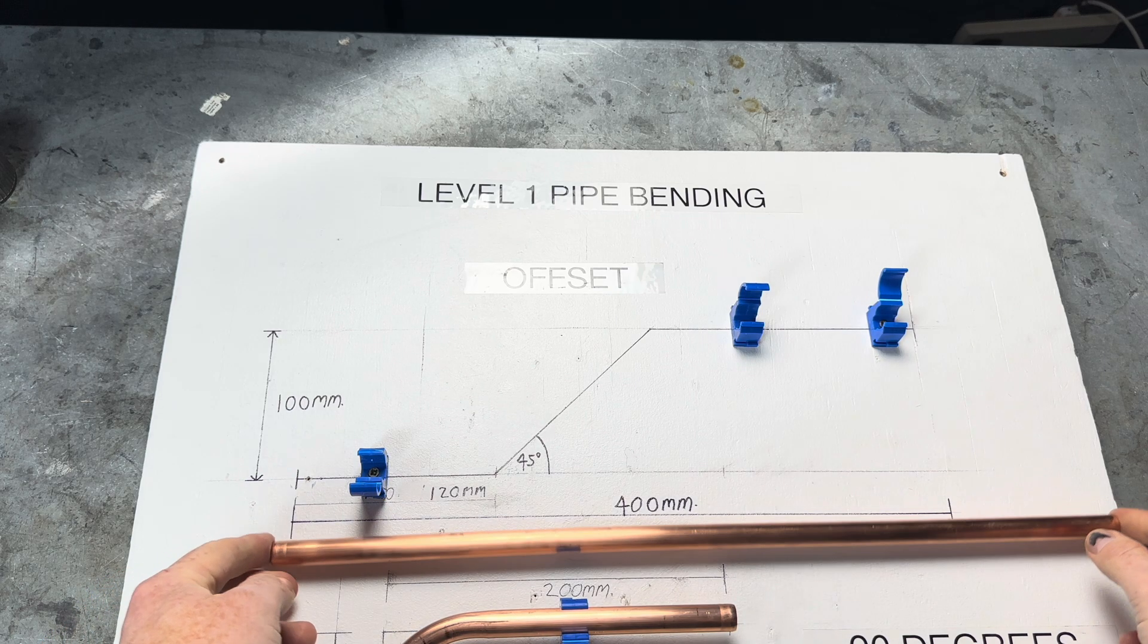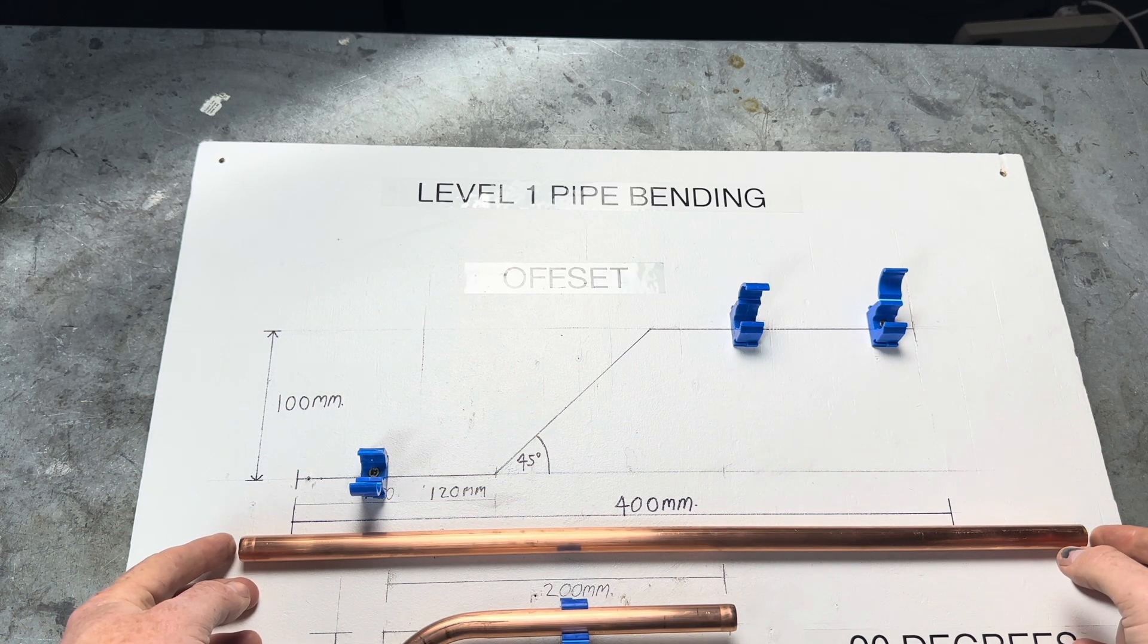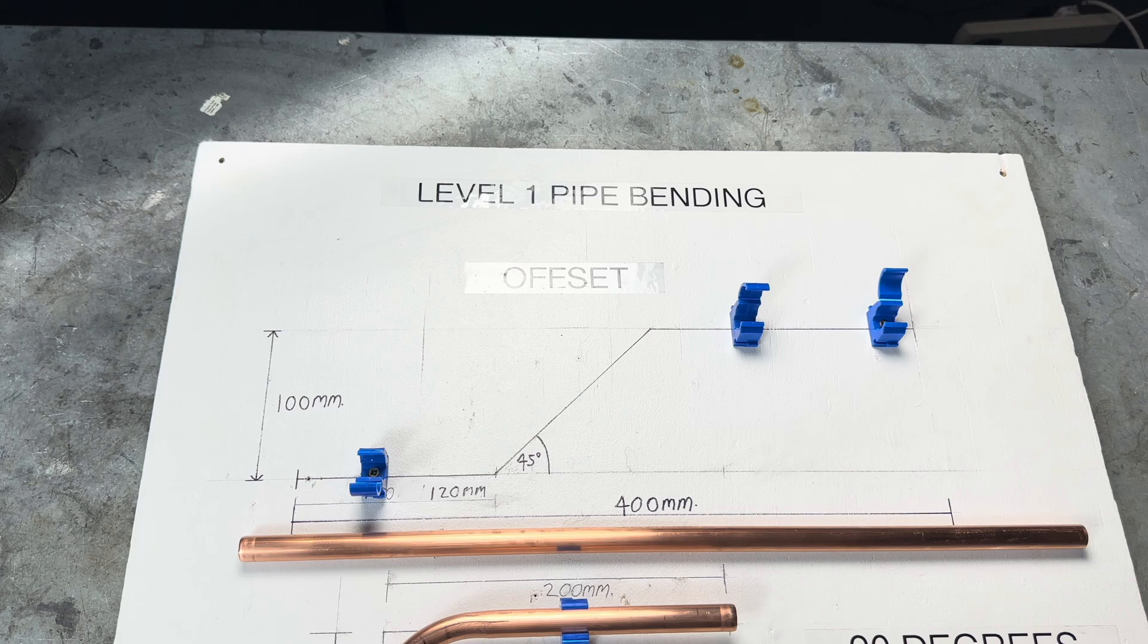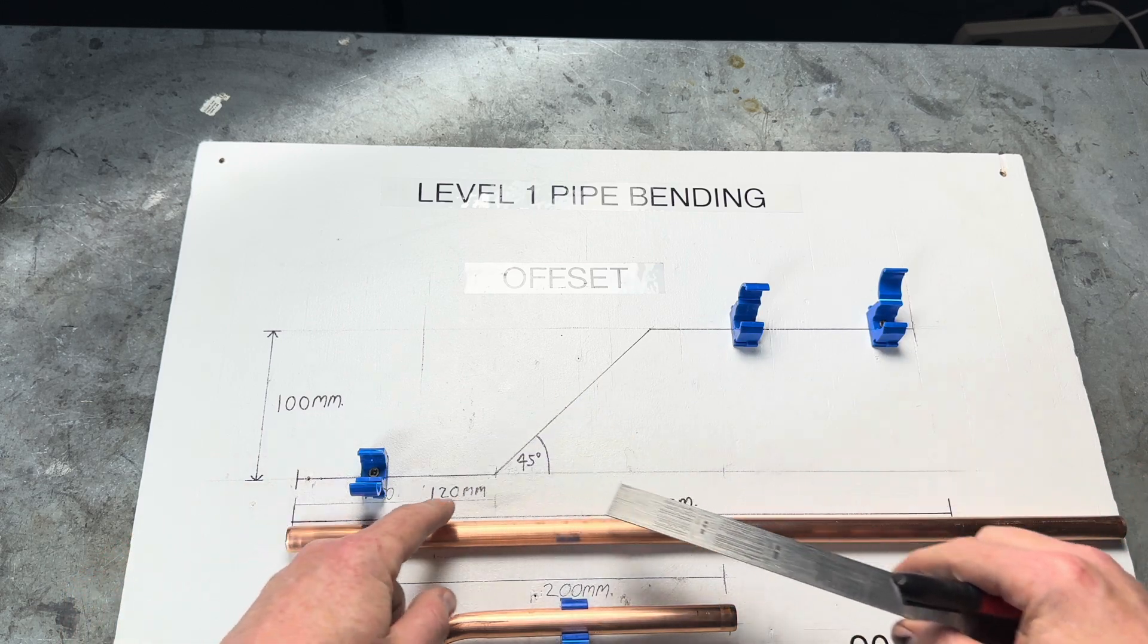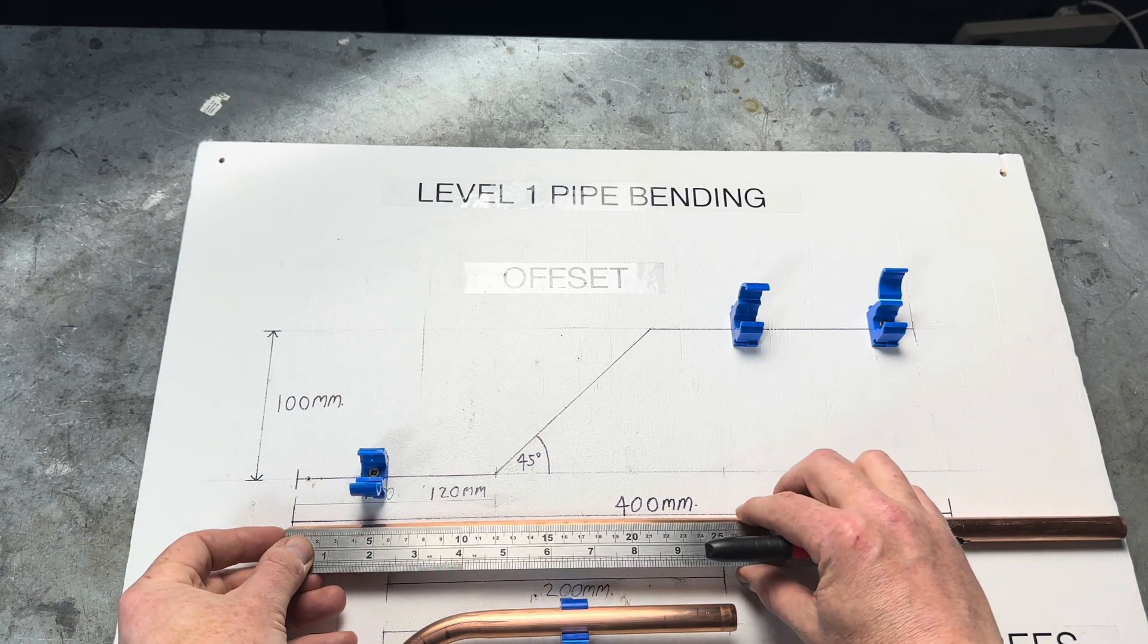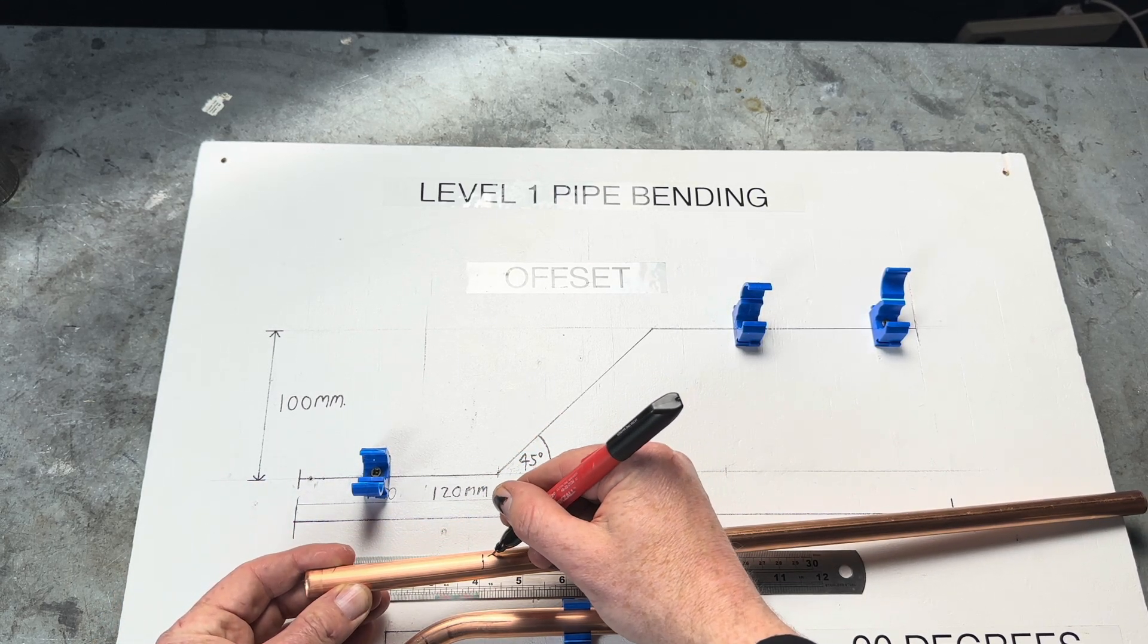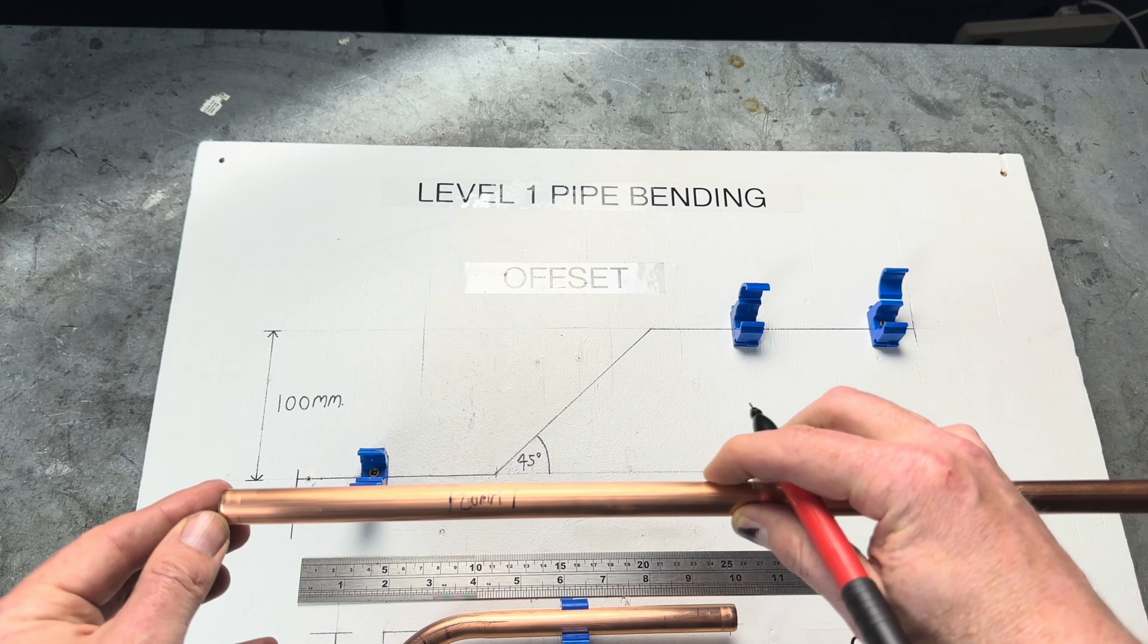So to do this we have got 500 millimeters of 15 mm pipe. I've just roughly allowed 400, 100 mm and 100 mm. I've just added it up but there's going to be some excess. Right, so the first job is we want the 120 mm in, we want the centre of the bend of a 45 degree bend. So what we do is we measure 120 mm in, like that, that's the first job.